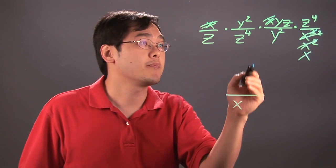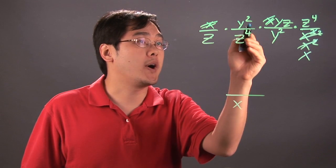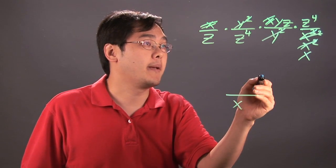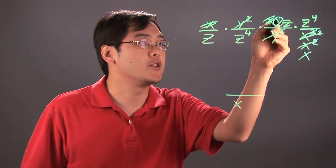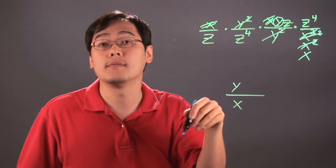Now, let's move on to the y's. The y squared and this y squared actually cancel completely. There's no more y's in the denominator, but there's a y left in the numerator, so there's a y left on top.